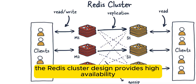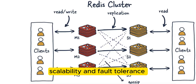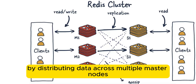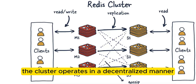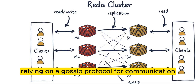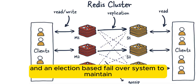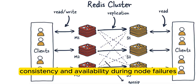In summary, the Redis cluster design provides high availability, scalability, and fault tolerance by distributing data across multiple master nodes and replicating it to slave nodes. The cluster operates in a decentralized manner, relying on a gossip protocol for communication and an election-based failover system to maintain consistency and availability during node failures.